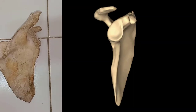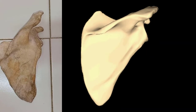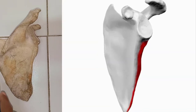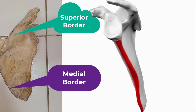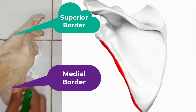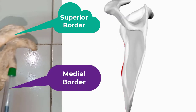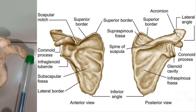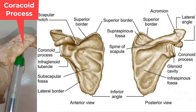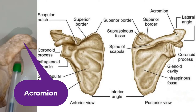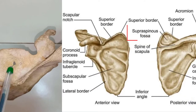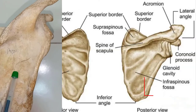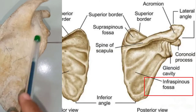We will discuss the anatomy of the scapula bone. As we can see, this is the lateral border, medial border, and superior border. This is the glenoid cavity, which articulates with the humerus bone. We also have the coracoid process and acromion.